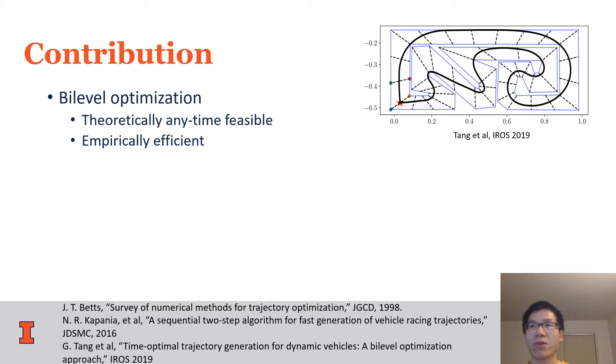Our previous work of bi-level optimization in race car problems shows it's theoretically anytime feasible and empirically efficient. The bi-level optimization starts from a spatially feasible path, computes the minimum time along the path and its gradient, and iteratively updates the path using gradient descent.